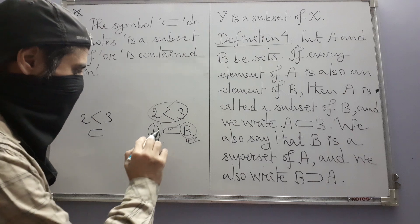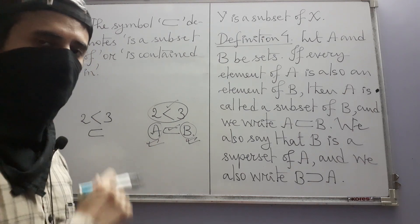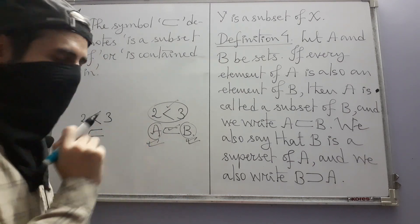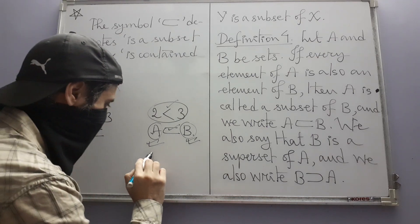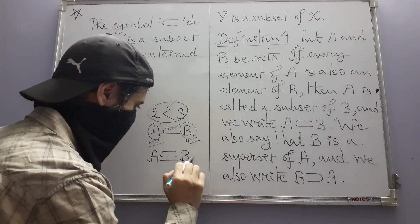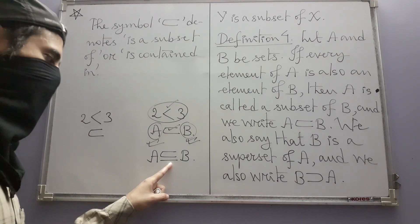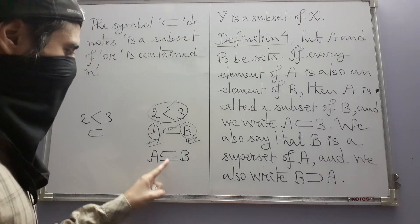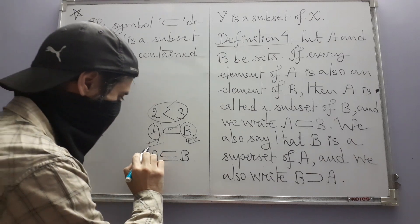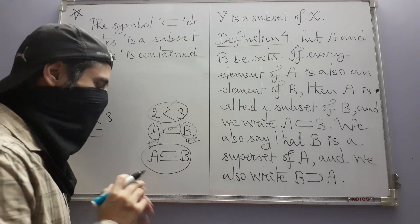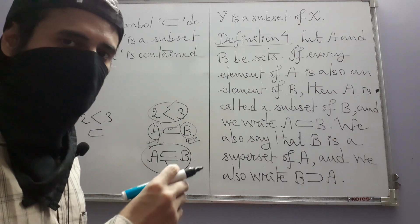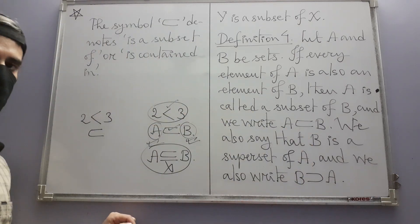One more thing: the use of this symbol is not consistent in mathematics. Some people use a slightly different symbol — with a horizontal bar below — to mean the same thing, that A is a subset of B. Those who use that symbol then use our symbol to mean something else. However, we do not have to worry about this because we are not going to use that variant in this text. For us, to express that a set is a subset of another, we just use our symbol.